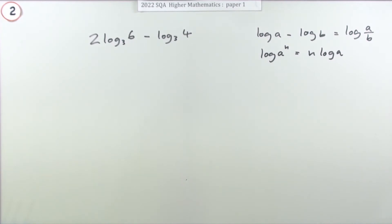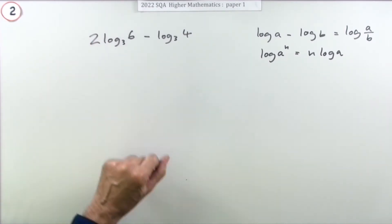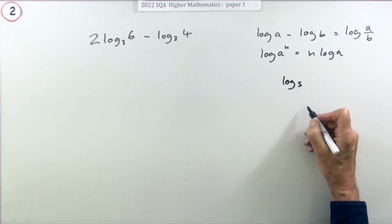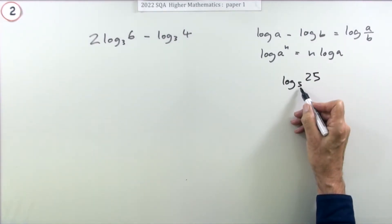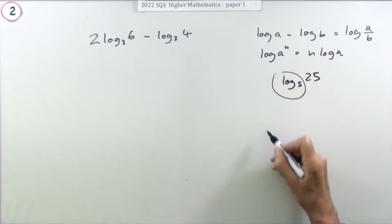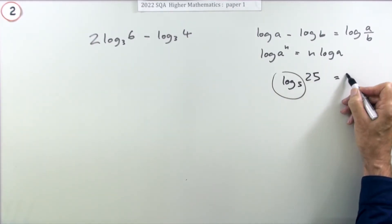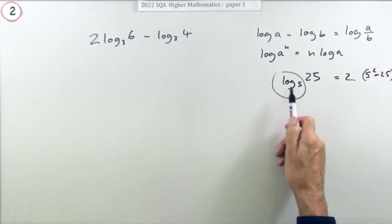A logarithm is a function that tells you what power has been used for that particular base. If I've got log base 5 and I put some number in here like 25, what that really says is what power of 5 is this? Well, that's 5 to the power 2 because 5 squared is 25.